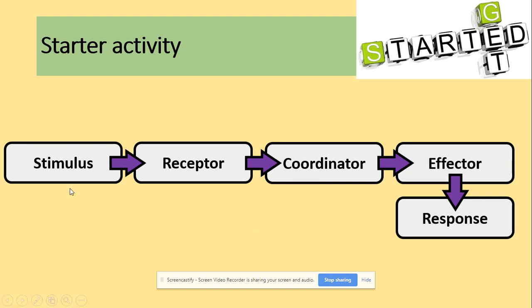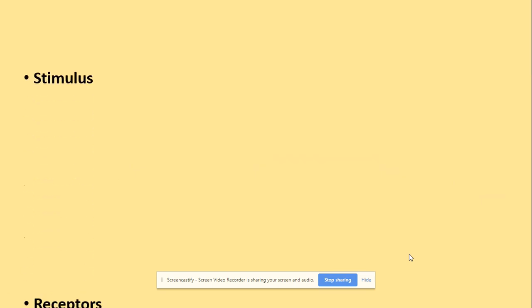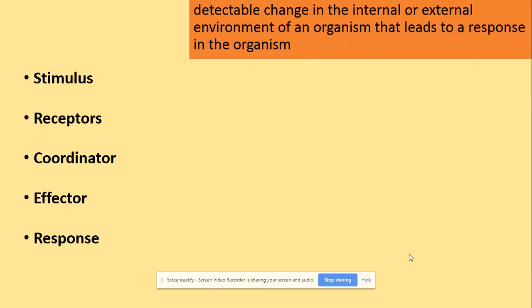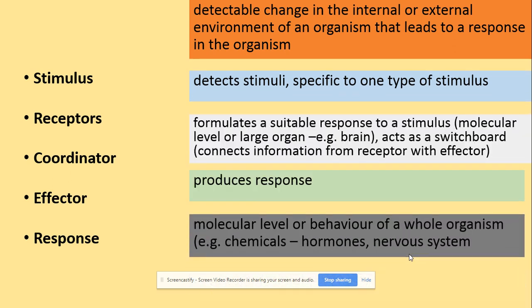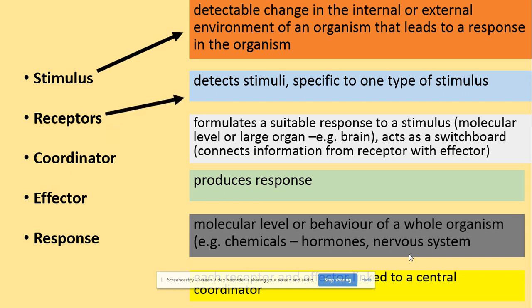Starting always with: stimulus, receptor, coordinator, effector, and response. So what are the definitions of those? Stimulus is the change in the internal or external environment of an organism that leads to a response. The receptor will detect the stimulus and will be specific to one type of stimulus. The coordinator will formulate a response to the stimulus. The effector will produce the response, and the response could be at the molecular level or the behavior of a whole organism.